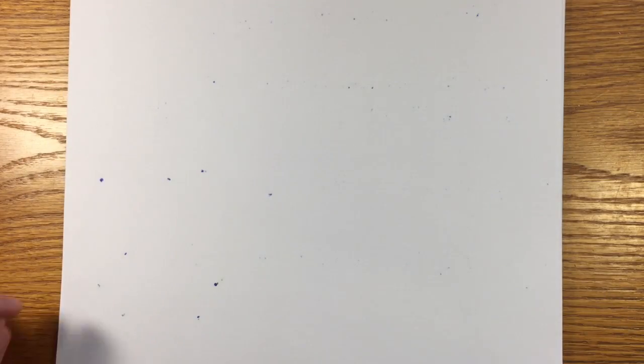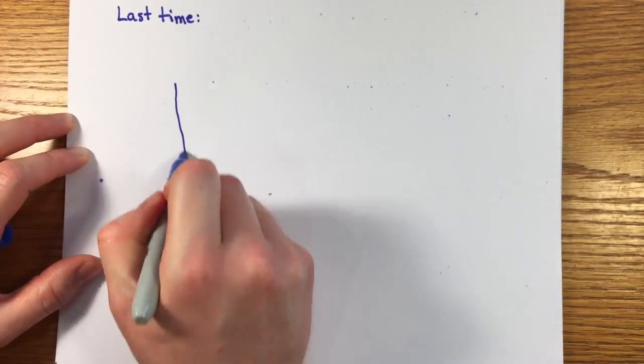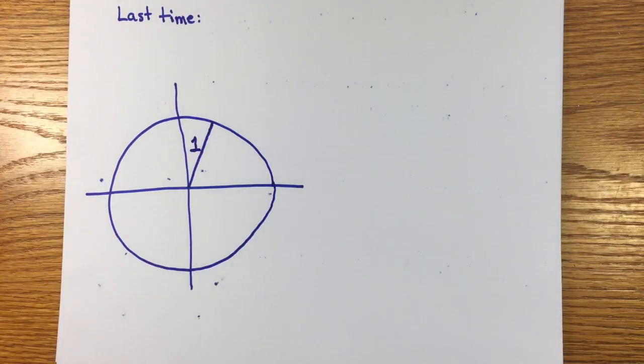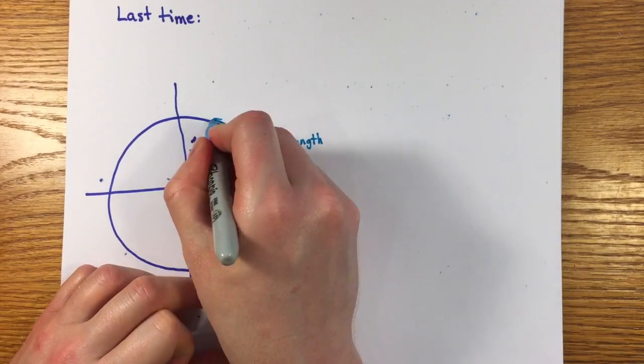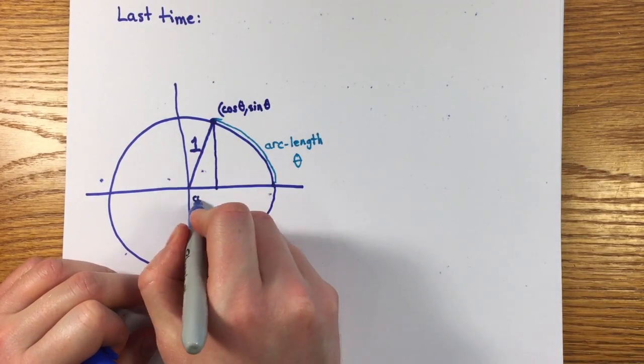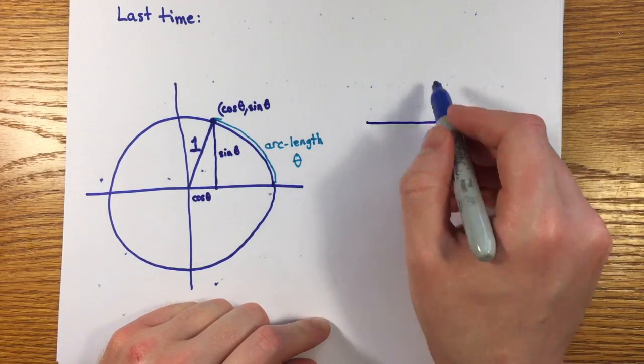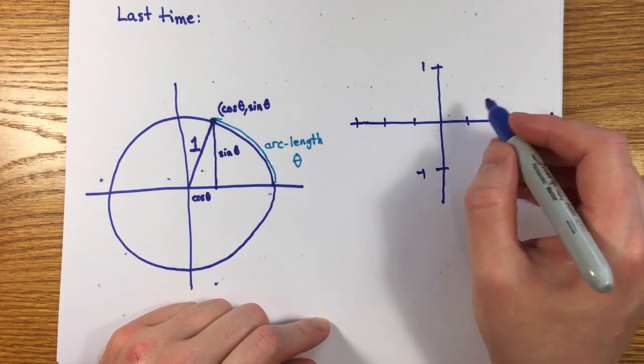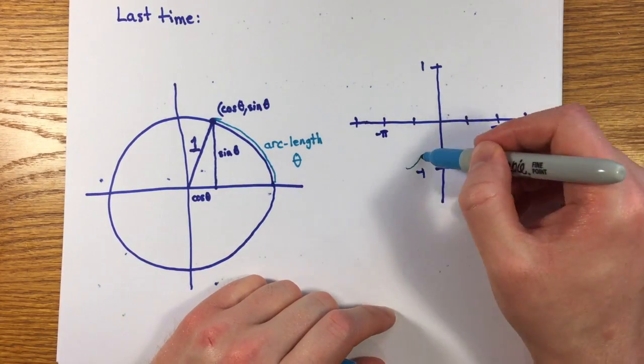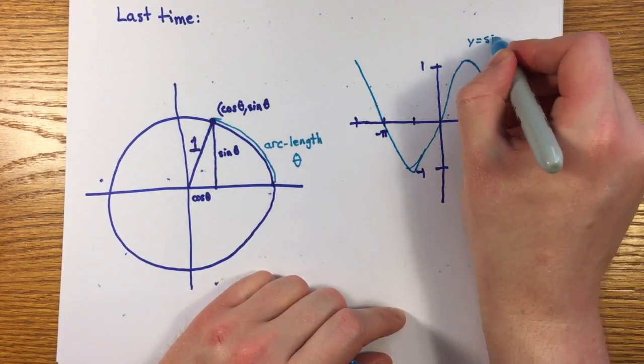In the last episode, I introduced the most natural definition of the trigonometric functions sine and cosine in terms of lengths of arcs on the unit circle, a definition which best connects their geometric significance to their ability to capture periodic phenomena. Here's a sketch of the graphs of sine and cosine.